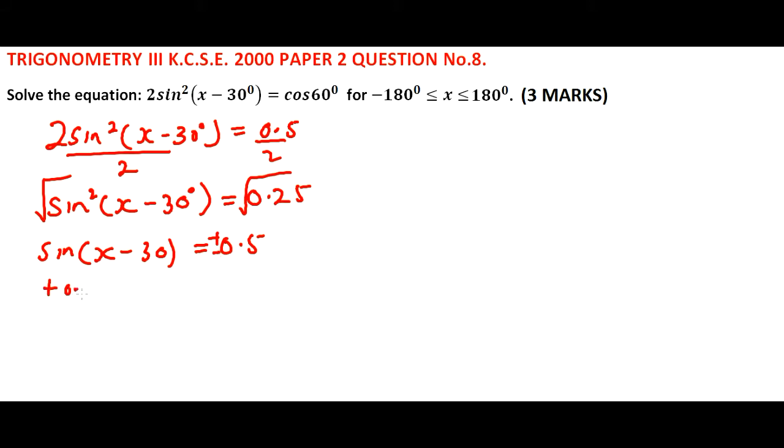Taking plus 0.5, we say sine of x minus 30 is equal to sine of 30. So x minus 30 equals 30, which means x is equal to 60.